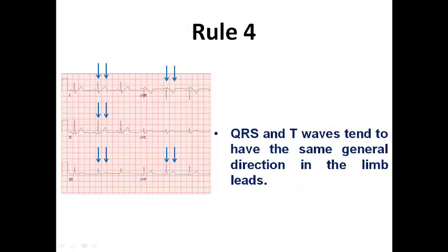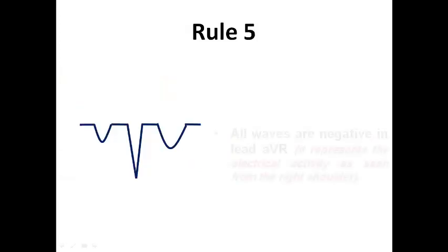Rule number four applies the same rule regarding the T-wave. It dictates that the QRS complex and T-wave tend to have the same general direction in the limb leads. If the complex is positive, the T-wave should be positive as seen in the signals shown. And if the complex is negative, the T-wave should be negative, like in AVR.